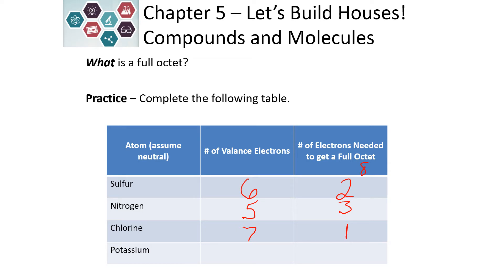Potassium is in column one, so it needs to either gain seven or lose one electron in order to get to the full octet. Which do you think would be easier — gaining seven or losing one? We're going to find out that losing one is easier.